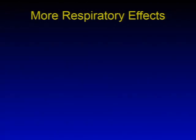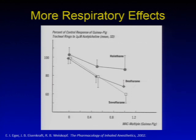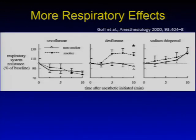There are other respiratory effects that are really important — one being whether or not you consider the agents irritating. One study showed that halothane leaves tracheal ring contractility at baseline, where it was pretty well affected by sevoflurane and desflurane equally. But when comparing sevo and des directly, airway resistance from desflurane can actually go up quite significantly during an anesthetic in smokers more so than in non-smokers. If you have a patient with what you might call irritable airways, desflurane perhaps is not the agent of choice — sevoflurane, since it keeps things relatively constant, would be preferred.